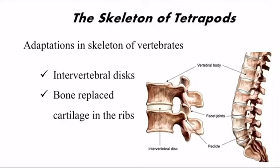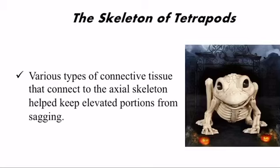Adaptations in the skeleton of tetrapods: The presence of intervertebral discs is an important adaptation. The intervertebral discs articulate with the adjoining vertebrae, help hold the vertebral column together, absorb shock, and provide joint mobility. Bone replaced cartilage in the ribs, making them more rigid — so the presence of bone in the ribs is also an important adaptation. Various types of connective tissue connecting to the axial skeleton help keep elevated portions from sagging.